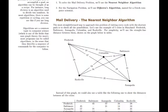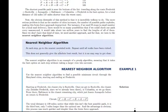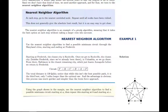Starting at Frederick, the shortest distance to any city is to Rockville, so we go there first. From Rockville, the shortest distance is to Columbia. From Columbia, the shortest is to Baltimore. From Baltimore, the shortest would be back to Columbia, but we've already been there, so we pick the next shortest to an unvisited city — 21 miles to Annapolis. So the route is Frederick to Rockville to Columbia to Baltimore to Annapolis and back. That gives 139 miles — not the perfect 132, but only a little longer and much easier to find. That's the nearest neighbor algorithm: very simple and straightforward.